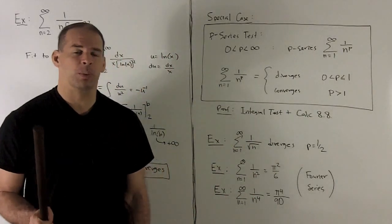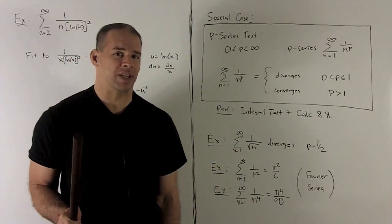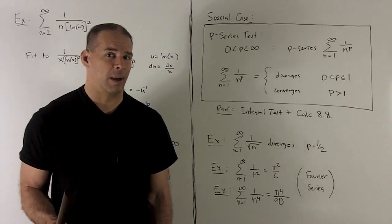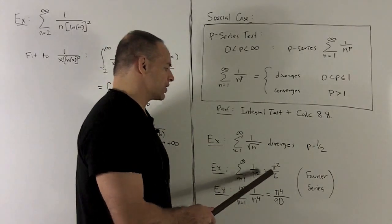Not only do we have convergence, but with a little bit more math, we can actually find the sum. That sum is going to be the unlikely number pi squared over 6.